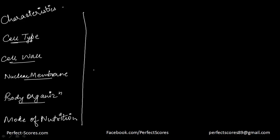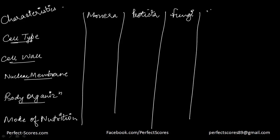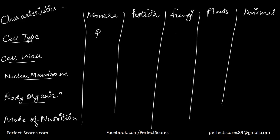You can make a table and divide it into the five kingdoms: Monera, Protista, Fungi, Plants (kingdom Plantae), and the animal kingdom. What is the cell type? Only Monera has a prokaryotic cell; rest all of them have a eukaryotic cell. That is one difference between them.